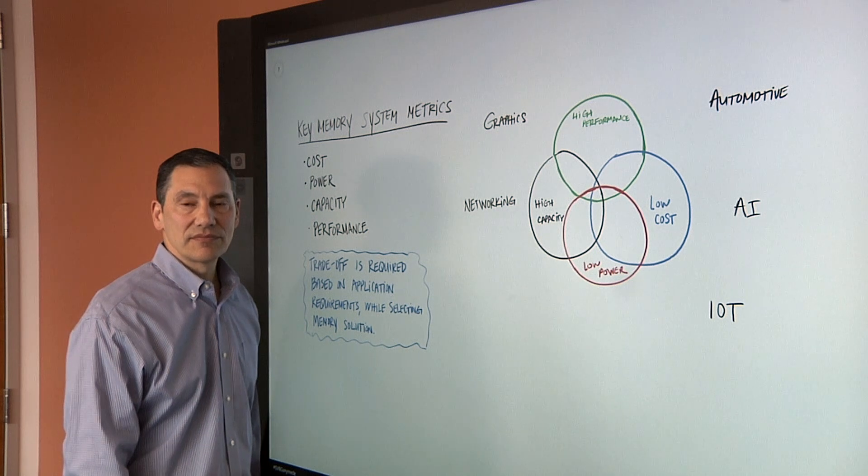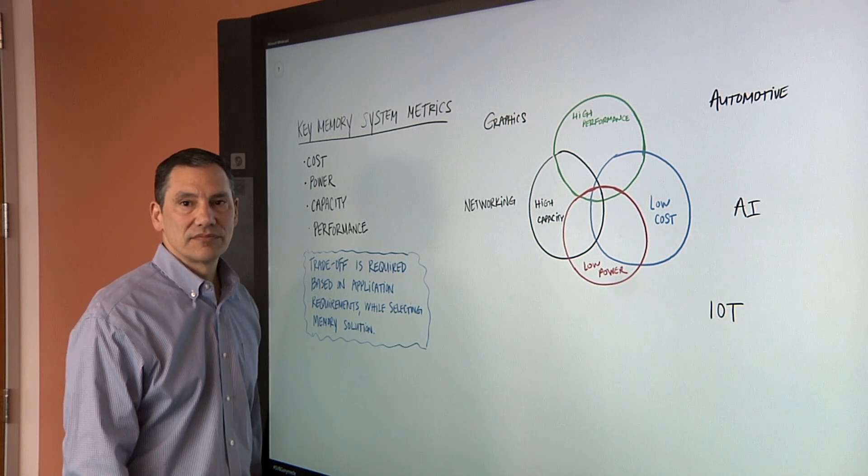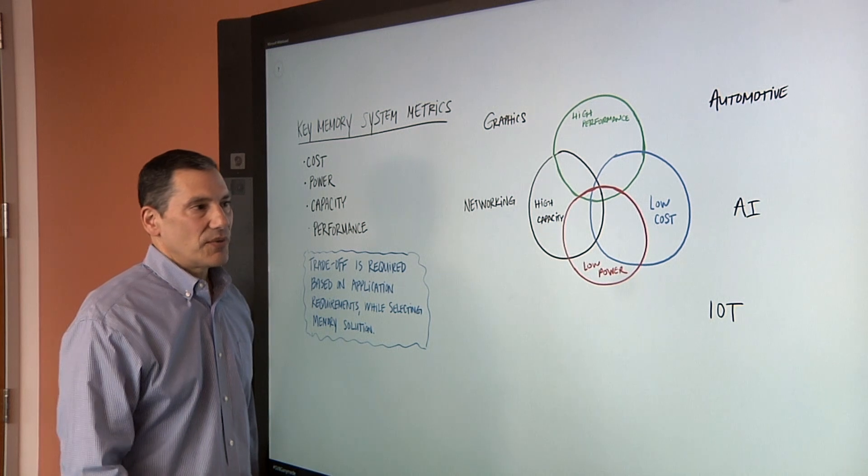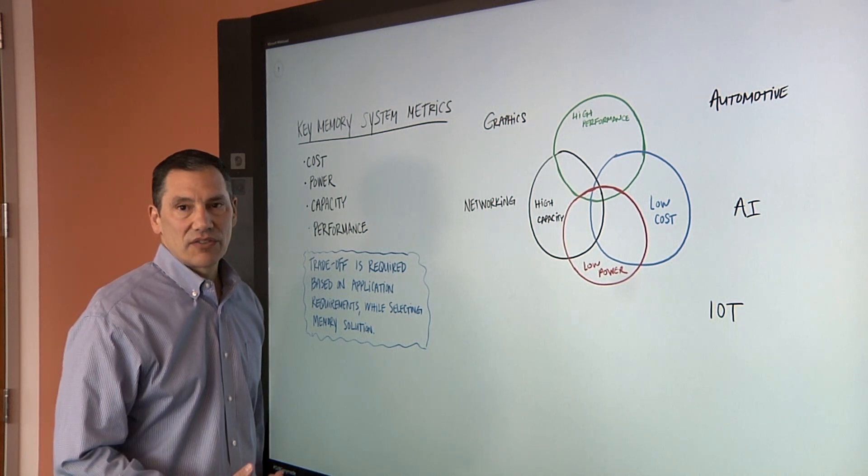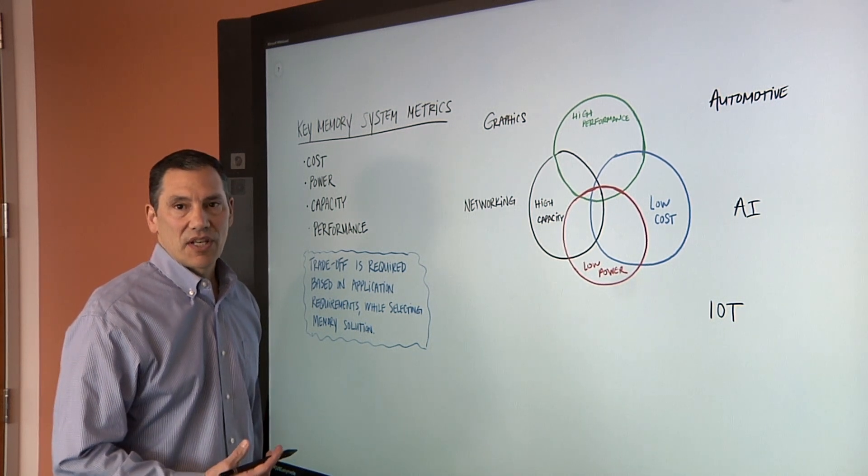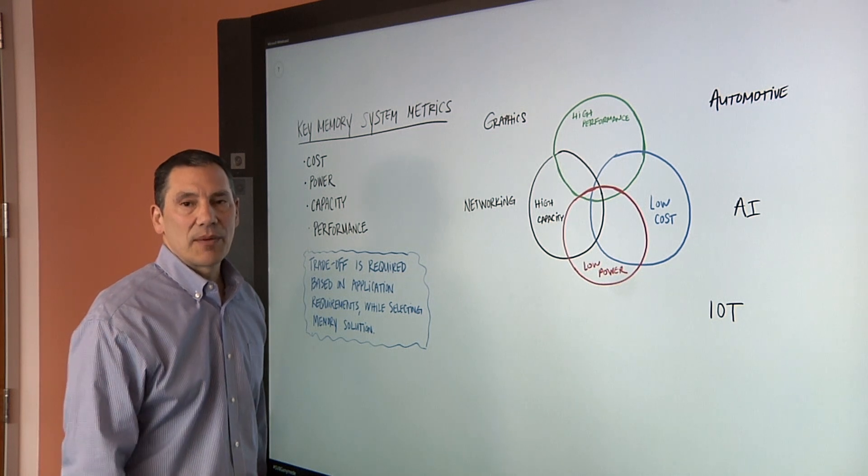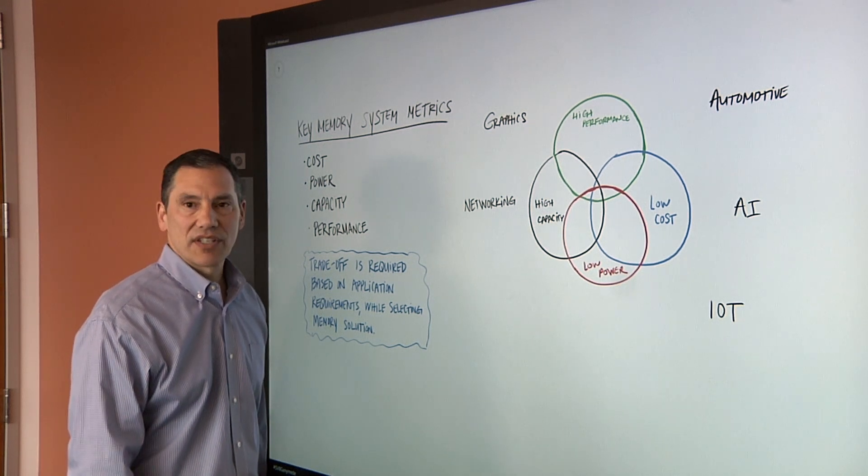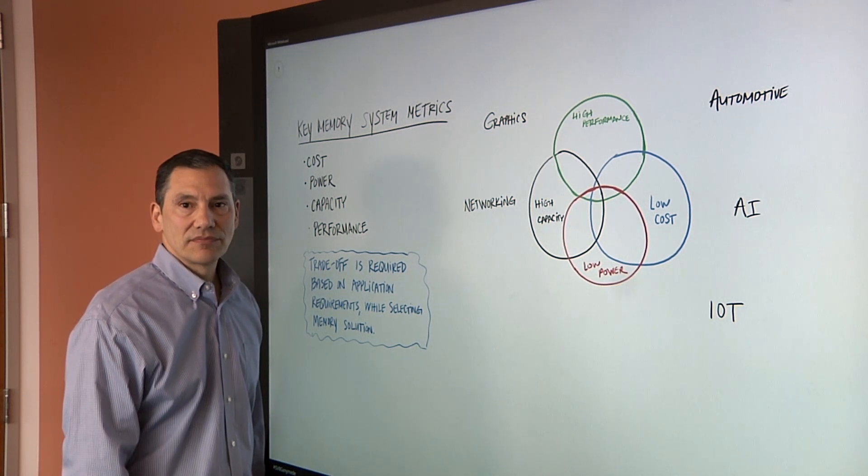And in something like networking, your key thing there is bandwidth back and forth, right? That's right. Networking cards have different applications like packet buffering where you need very high bandwidth, maybe moderate density.